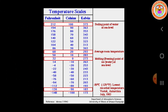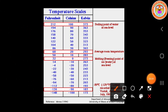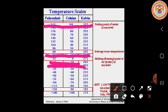Look at the table, students. Consider the first reading: 212 in Fahrenheit is equal to 100 in Celsius and 373 in Kelvin. Consider another value: 68 in Fahrenheit is equal to 20 in Celsius and 293 in Kelvin. Consider the starting reading: 32 in Fahrenheit is equal to 0 in Celsius and 273 in Kelvin. So like this we can compare the three scales.